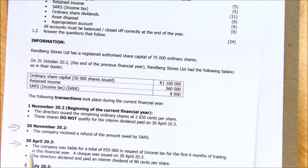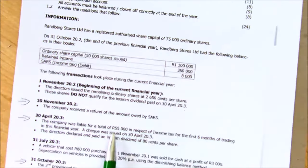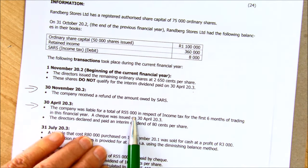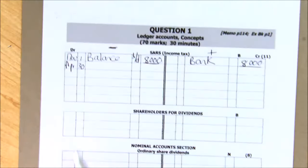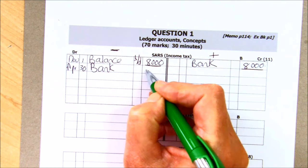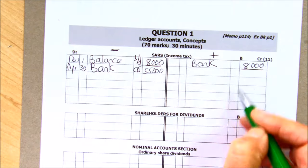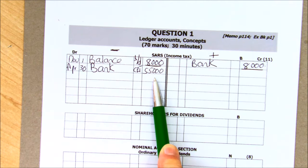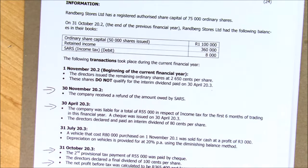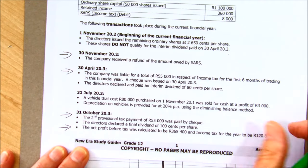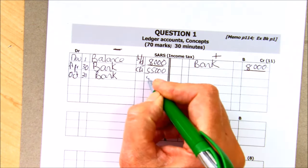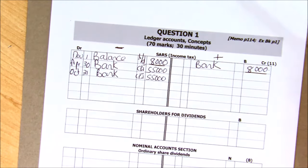On the 30th of April the company was liable for a total of fifty-five thousand rand in respect of income tax for the first six months. This is provisional tax — you have to estimate it and pay it. You credit your bank because you're paying, and you debit this liability account. Provisional tax means you've got to start paying upfront before you know the actual tax. These payments are done every six months, so on the 31st of October another fifty-five thousand is paid — again crediting your bank and debiting the liability. Both come out of your CPJ.